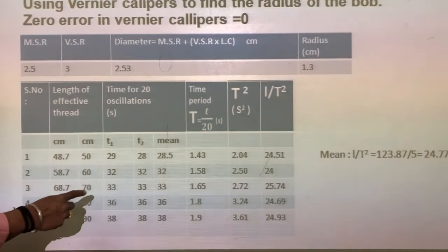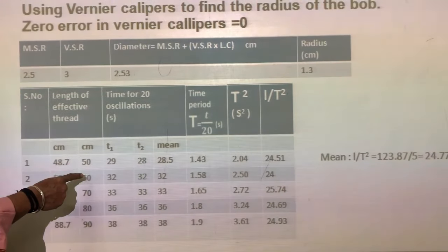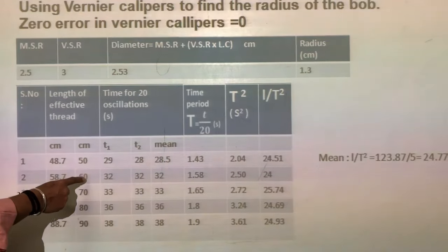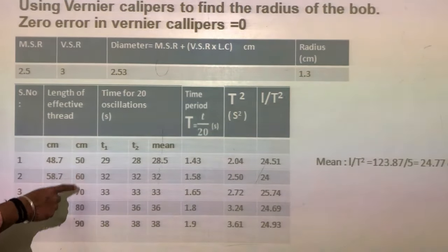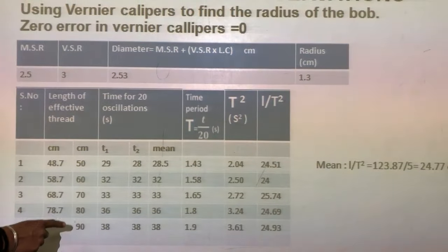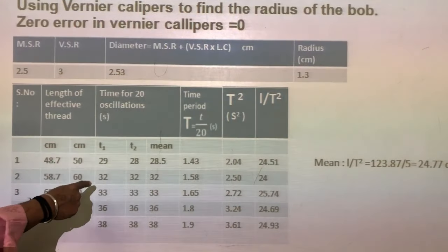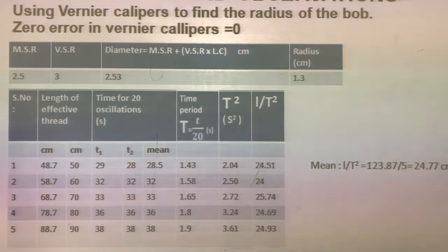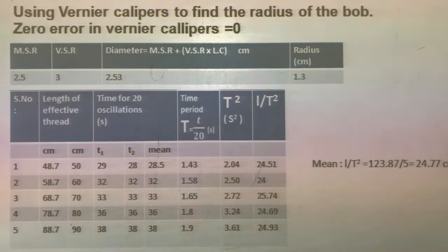Repeat the procedure for various lengths — 60, 70, 80, and 90 centimeter — increasing in steps of 10 centimeter, and observe the time taken for 20 oscillations each time.